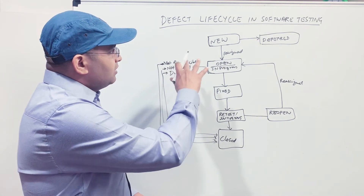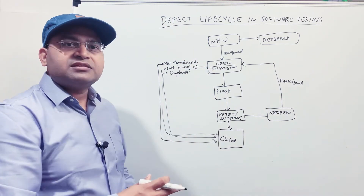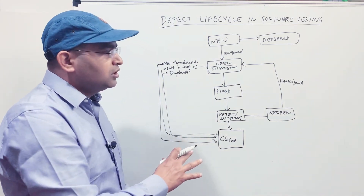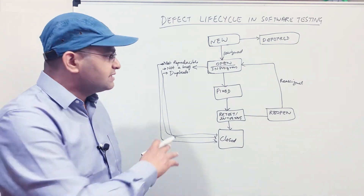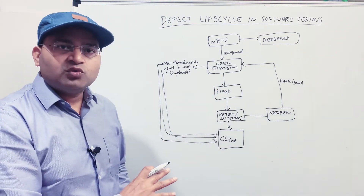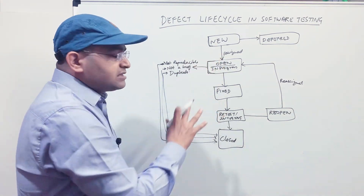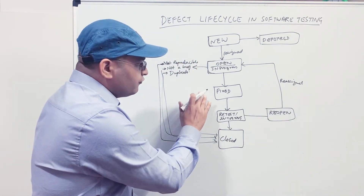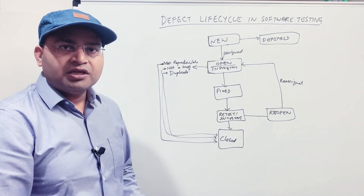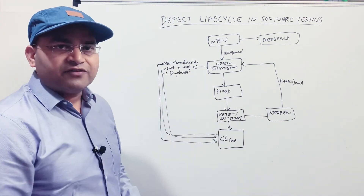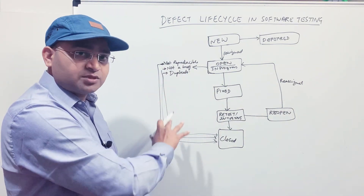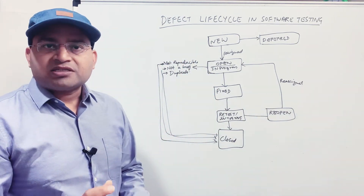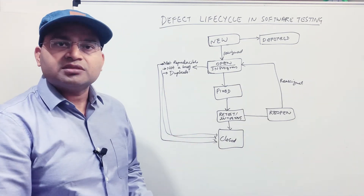Jira has built-in defect management functionality and its workflows can be highly customized to enable a tailored defect workflow per project. Do not get worried if the defect workflow you see in your project seems complex or does not exactly match this one. However, the statuses covered here will most definitely be present in your defect workflow, either in the same form or in a similar form.